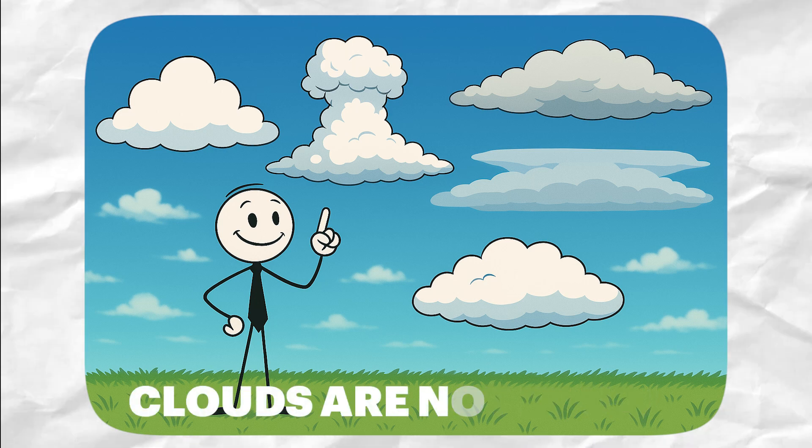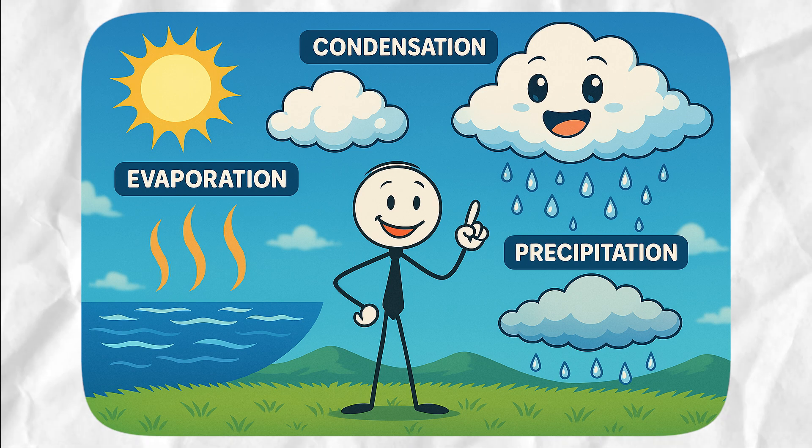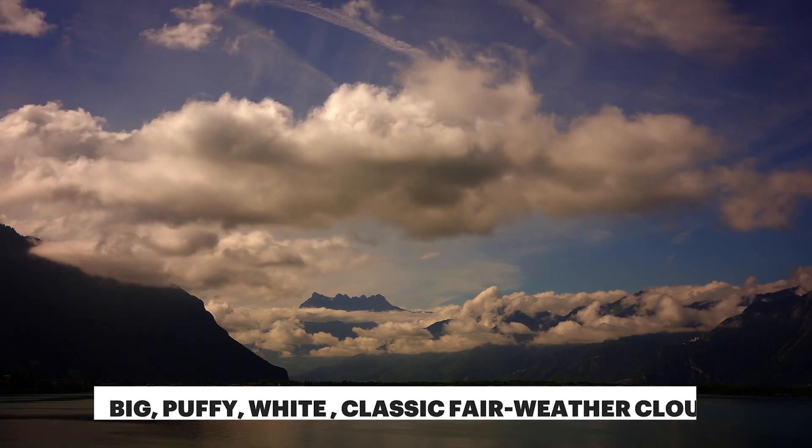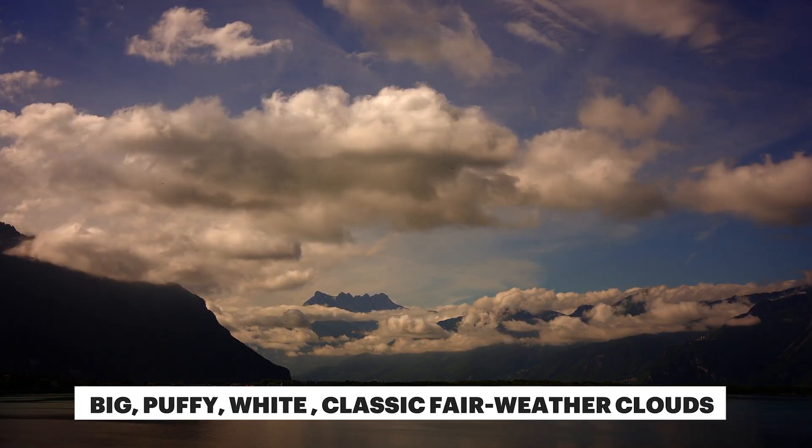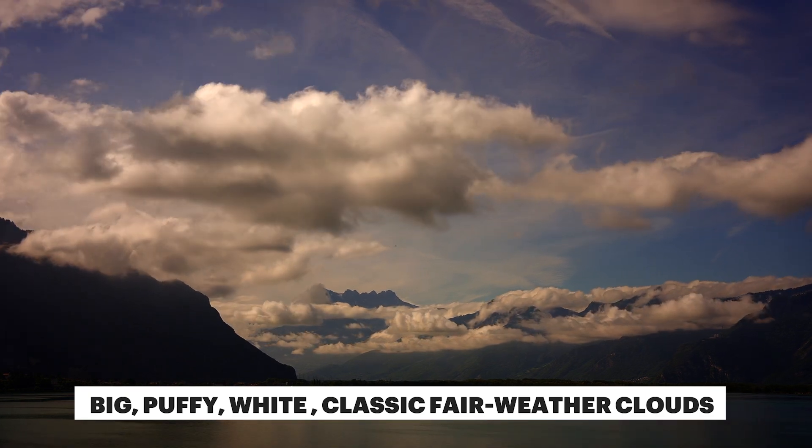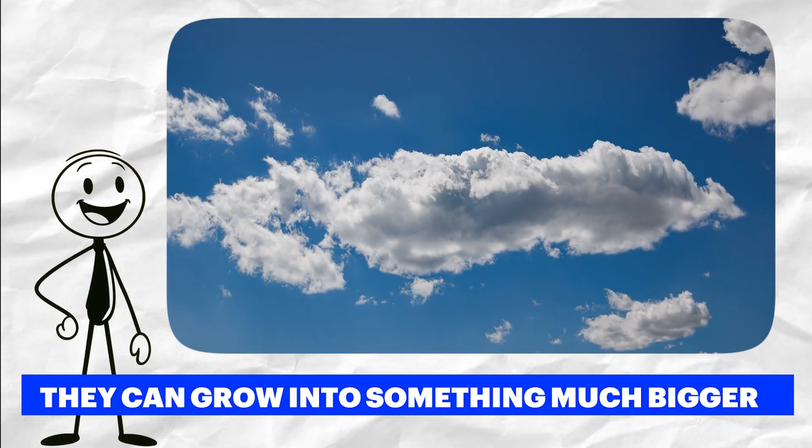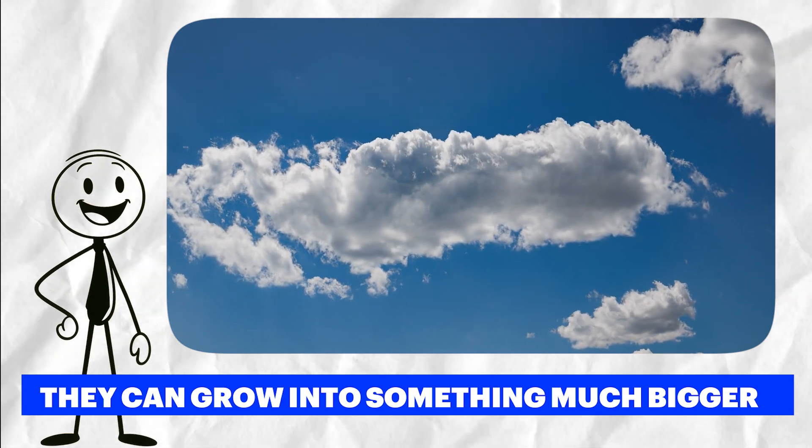But not all clouds are created equal. There are many types of clouds. Let's break down the types that really matter when we're talking about precipitation. First, we have cumulus clouds. You've probably seen these on a nice day. Big, puffy, white, classic fair weather clouds. They usually hang out during sunny afternoons. Most of the time, they don't do much. But under the right conditions, they can grow into something much bigger.